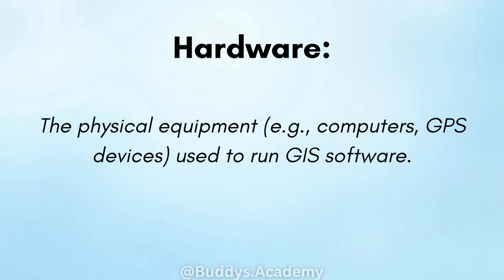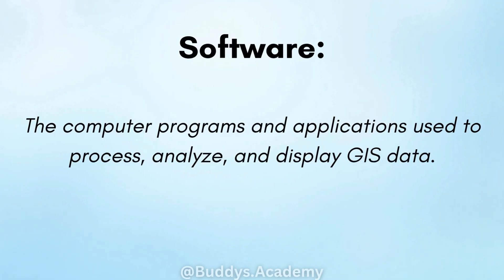Hardware: this is the physical equipment — examples include computers and GPS devices — that are used to run your GIS software. Software: this is the computer programs and applications that are used to process, analyze and display GIS data.